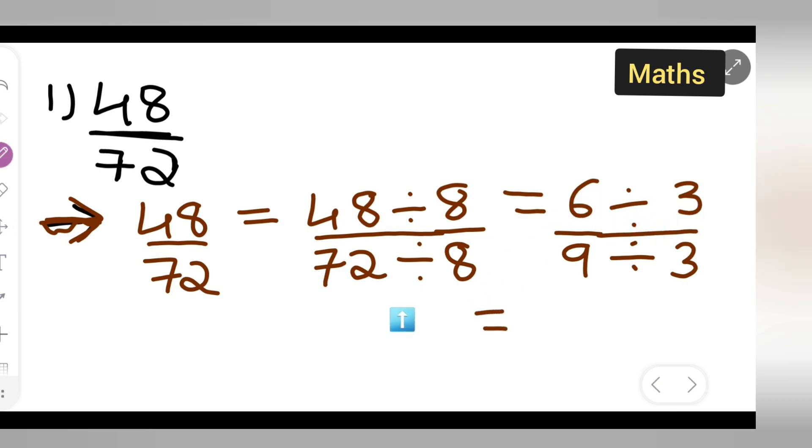So, your answer will be 2 upon, here it will be what? 3 1's are 3, 3 3's are 9. So, here it is 2 upon 3. So, this is the way we have to reduce this given fraction into simplest form.